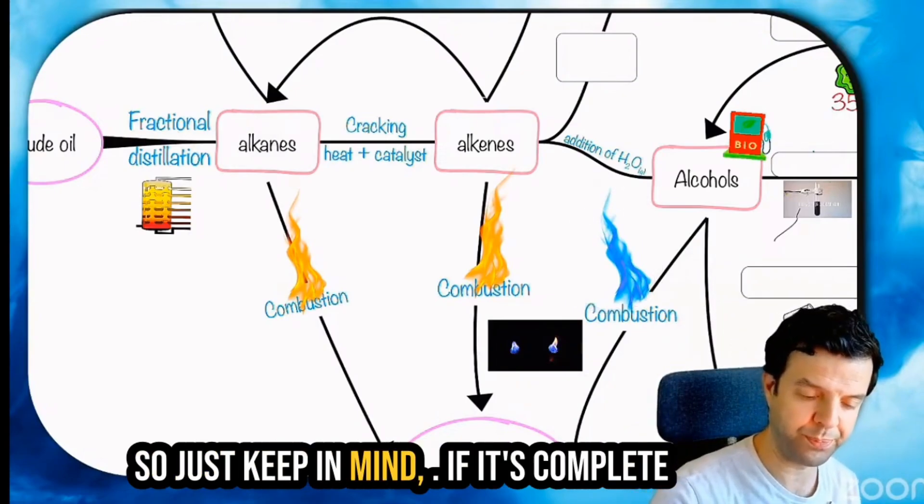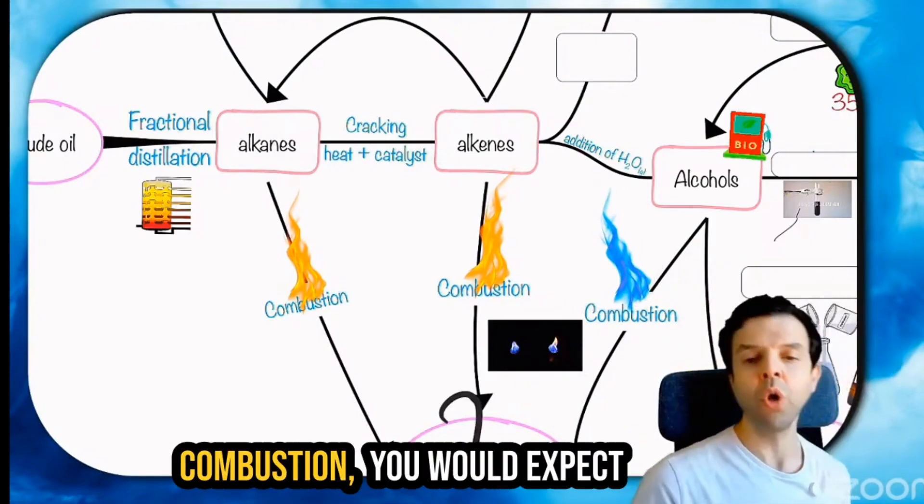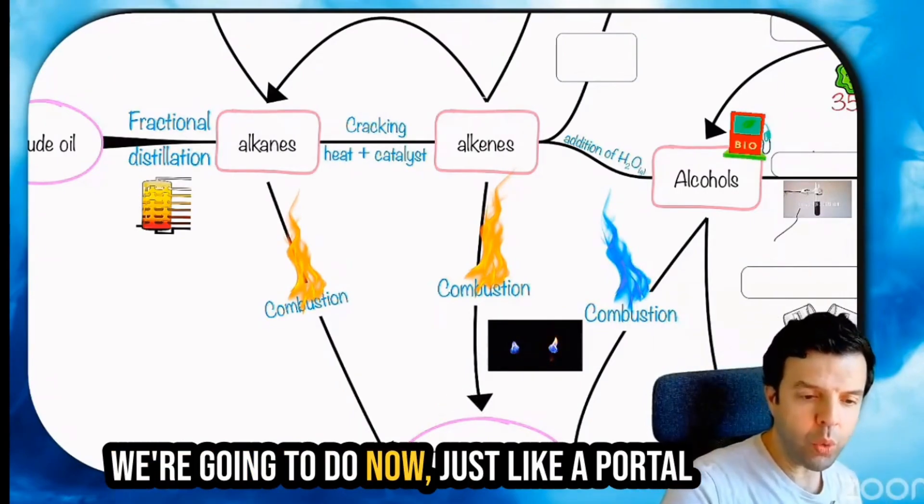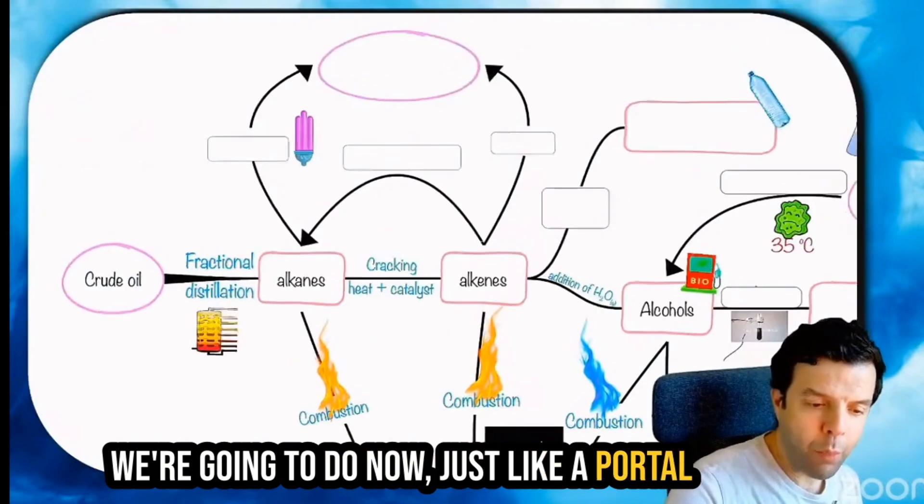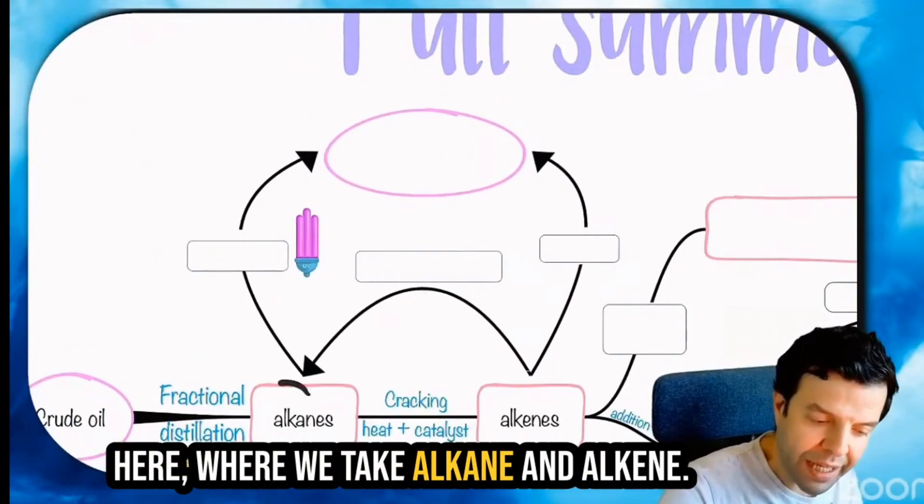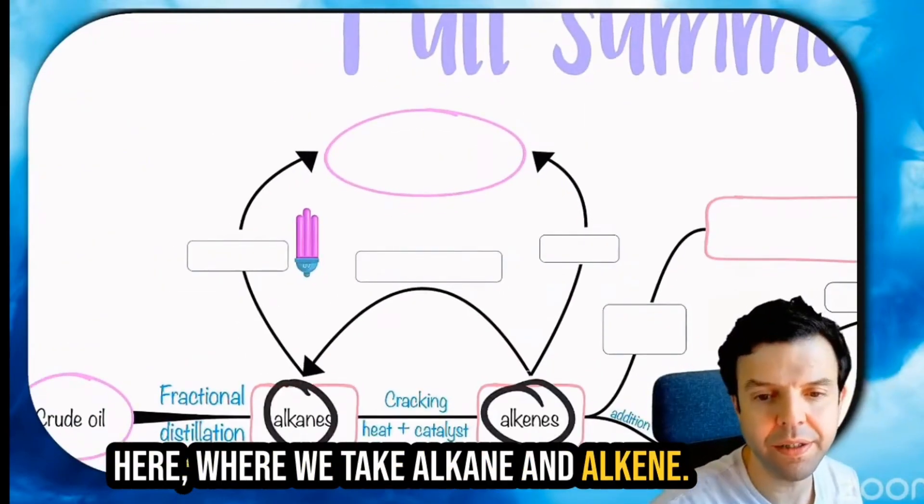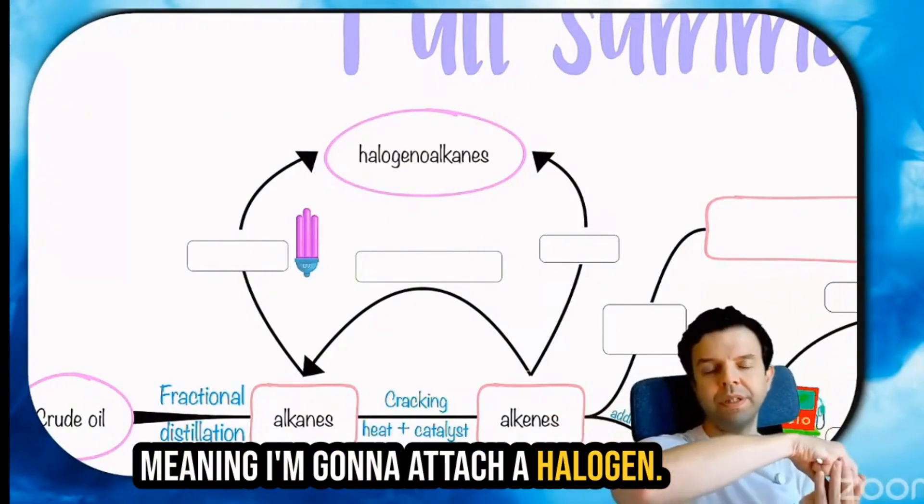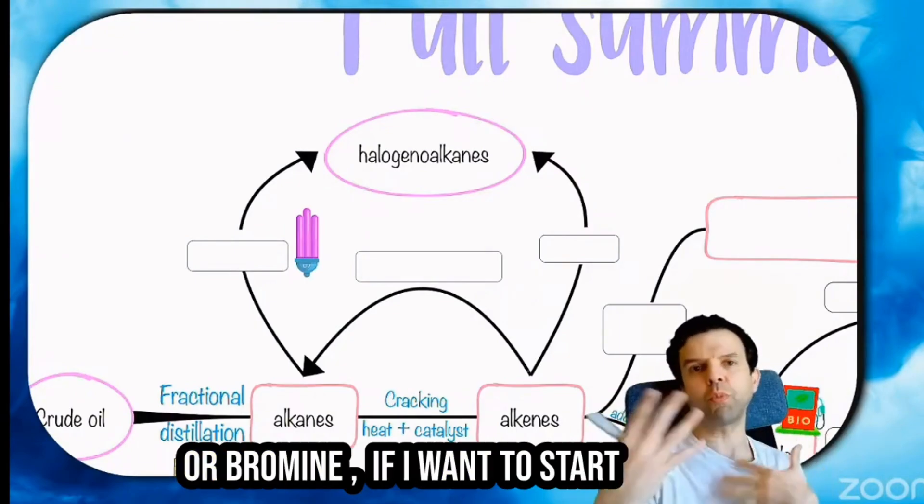So just keep in mind, if it's complete combustion, you would expect to get carbon dioxide and water. We're going to do now just like a portal here, where we take alkanes and alkenes. I'm going to turn them to halogenoalkanes. Meaning I'm going to attach a halogen, like chlorine or bromine.